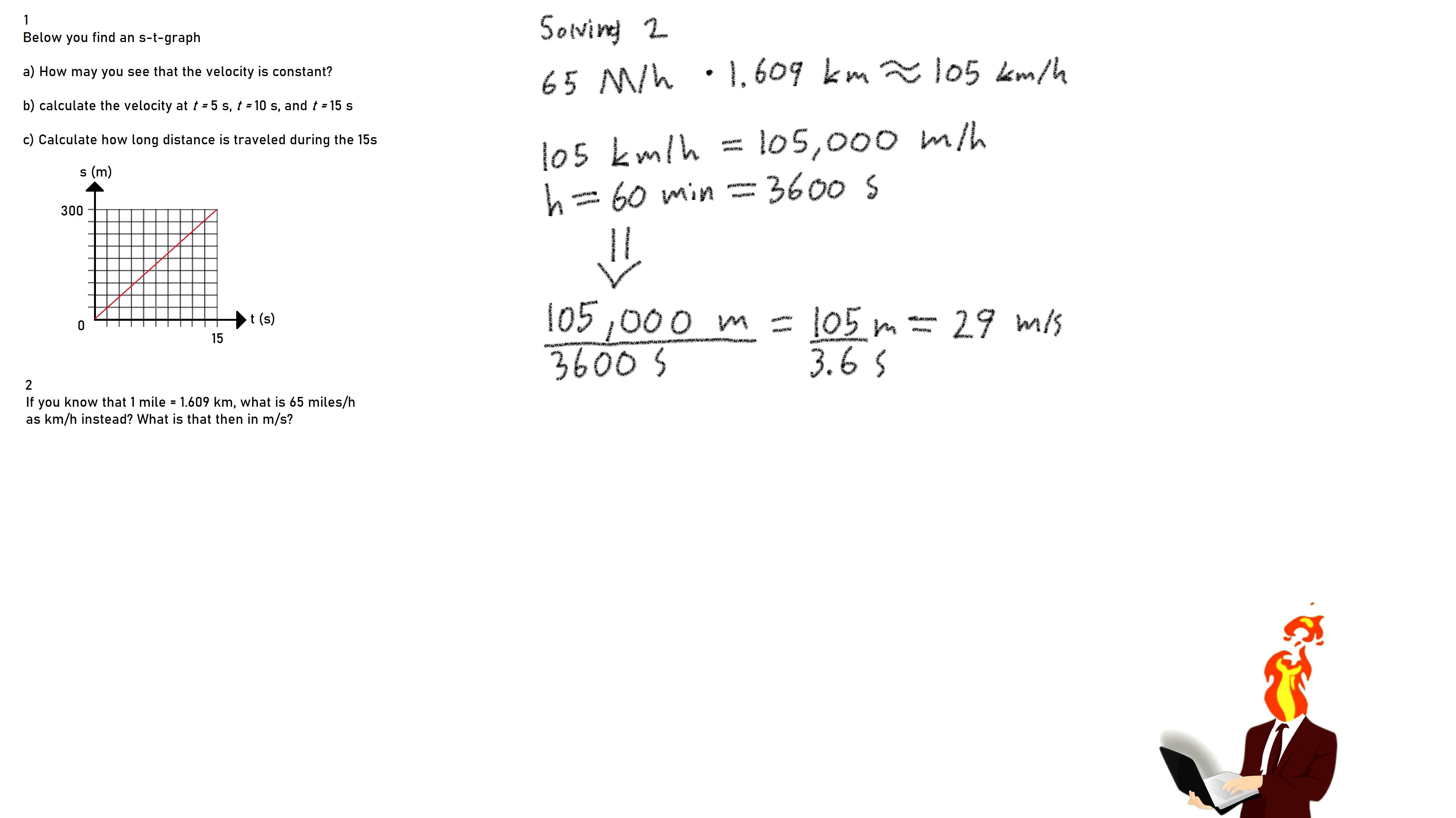Question 2. If you know that one mile is equal to 1.609 kilometers, what is 65 miles an hour as kilometers per hour instead? What is that then in meters per second?